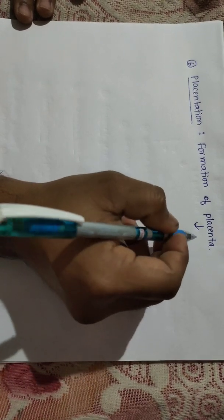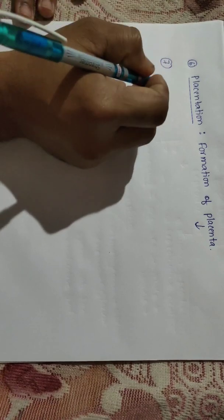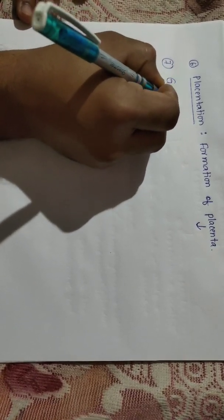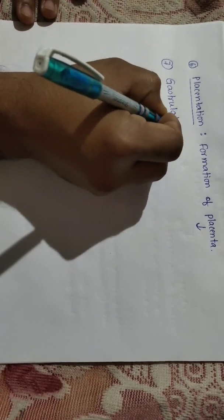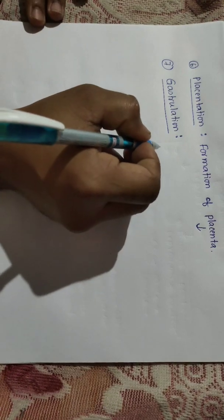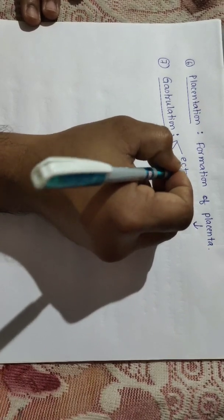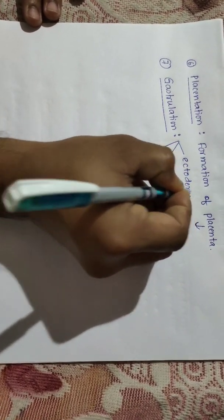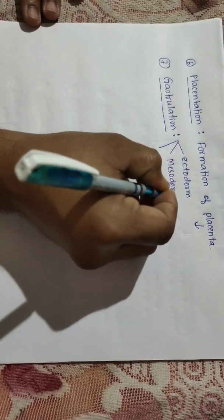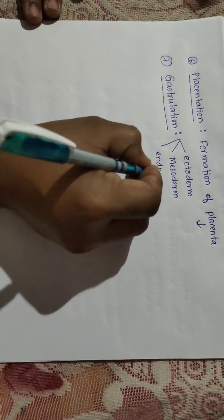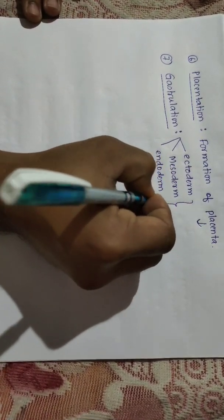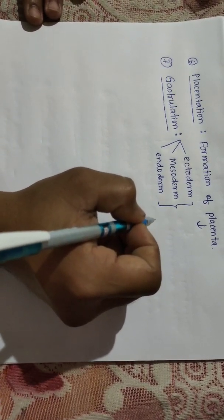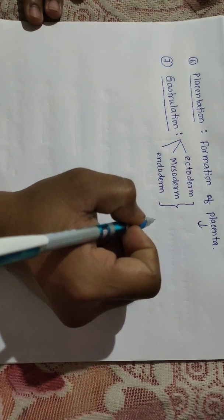The next phase is called gastrulation. Gastrulation simply means the formation of three germ layers. We have already come to know about these germ layers. The three germ layers are: ectoderm, mesoderm, and endoderm — the innermost layer is called the endoderm. These three layers will give rise to the future organs, tissues, and organ systems of the body.